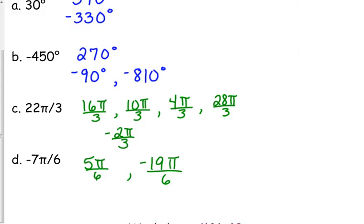The moral of the story: co-terminal angles mean they are the exact same angle — you've just gone in a different direction to get there, or gone multiple times around the circle. They have the exact same properties. And if your angle is greater than 360 or less than negative 360, you may have to add or subtract multiple times to find a positive or negative co-terminal angle. You can't assume that subtracting 2 once will always give a negative, or adding once will always give a positive.